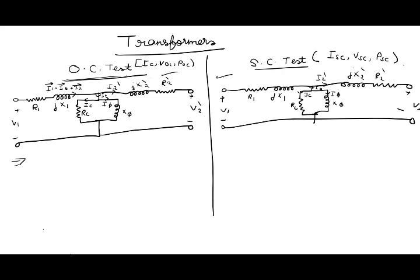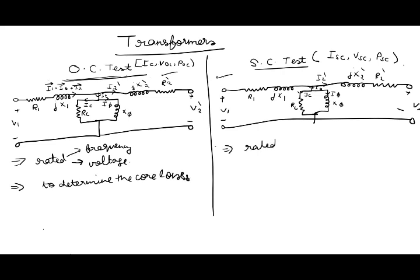Open circuit test is carried out at rated frequency and voltage, and it is done to determine the core losses of the transformer. And in short circuit test, rated current is used or applied, and it is done to determine full load copper loss.